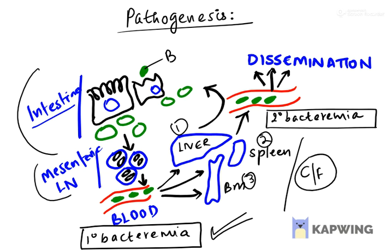Suppose you have not identified a typhoid fever in this phase of illness — what happens then is the secondary bacteremia phase, which is the proliferation of the bacteria in the blood again. During the secondary bacteremia phase, the organism is going to disseminate into the other organs. And that is when we call it a complicated or severe form of typhoid fever.